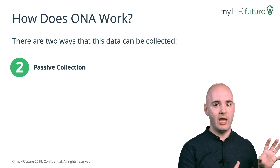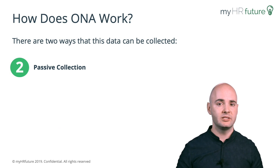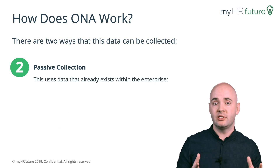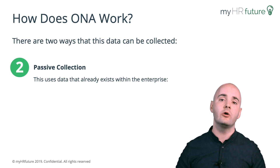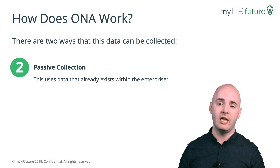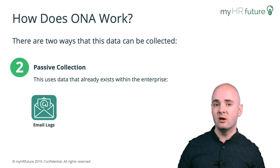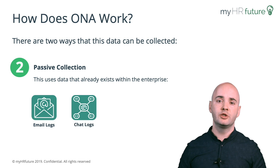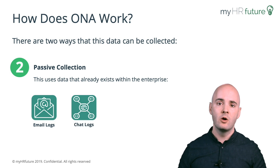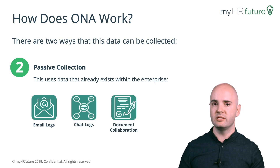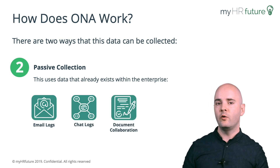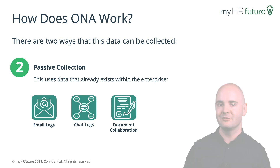The second way is a passive way of understanding relationships. Just as it sounds, it uses data that already exists within the enterprise, such as email logs, chat logs, or in some cases, even understanding who's collaborating on certain documents.